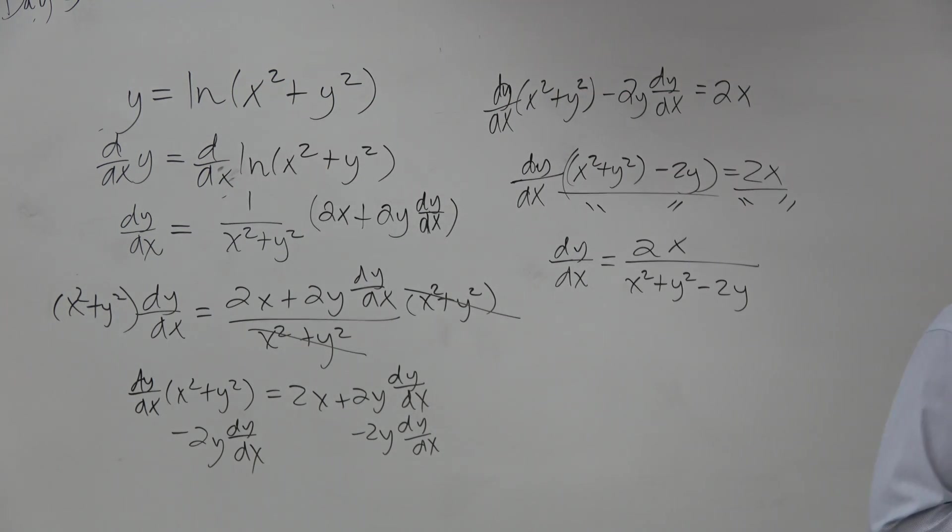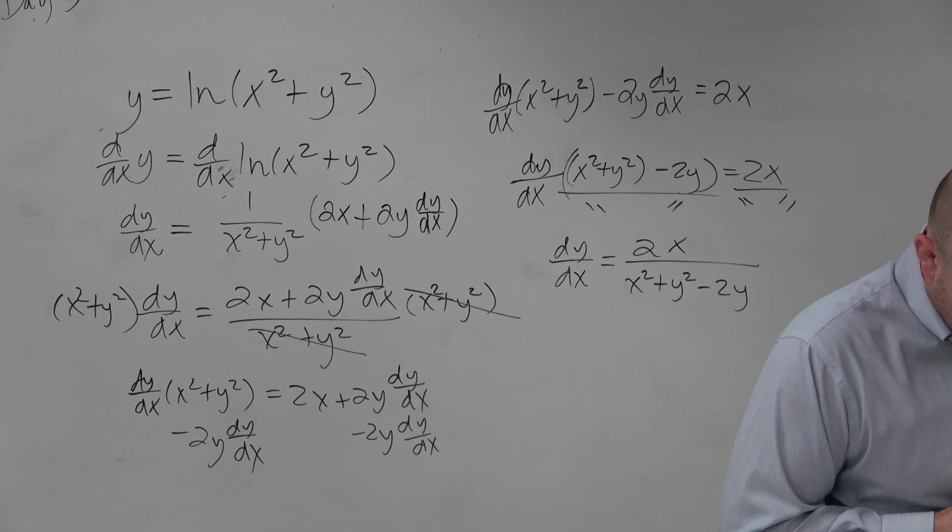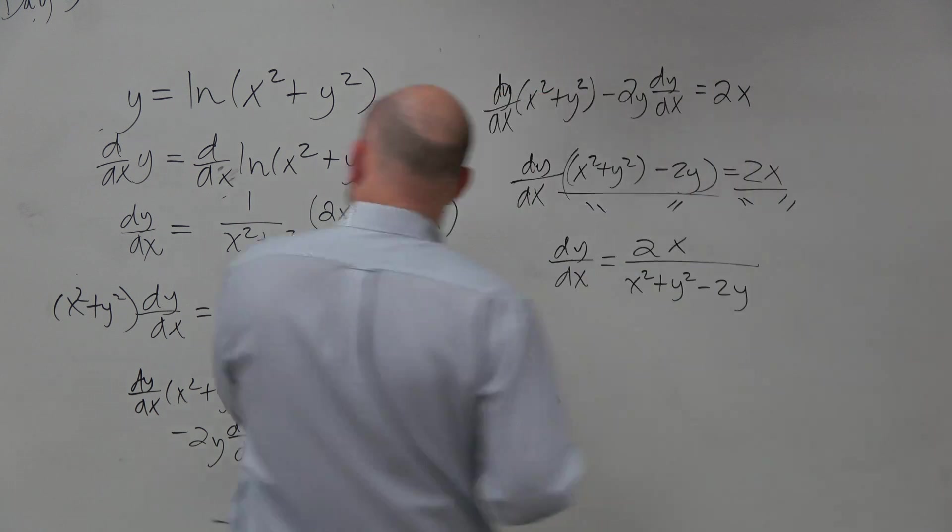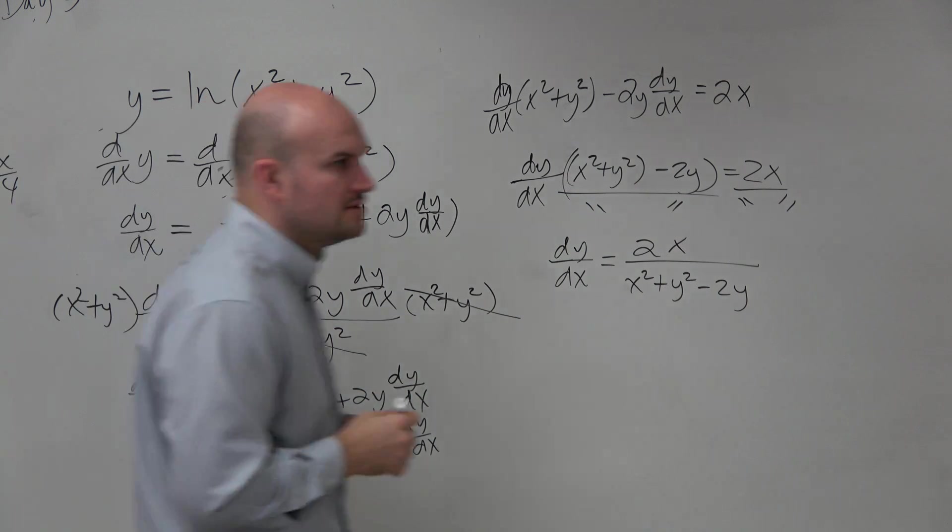You multiplied by x squared plus y squared to get rid of the denominator? Yes. Yeah, I multiplied x squared plus y squared on both sides to get rid of the denominator. Just like, you know, if you have 3 equals x over 4 and you've got to solve for x, you multiply by 4 on both sides to get rid of that denominator.